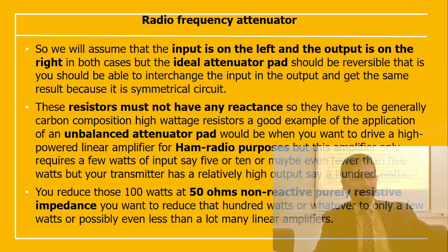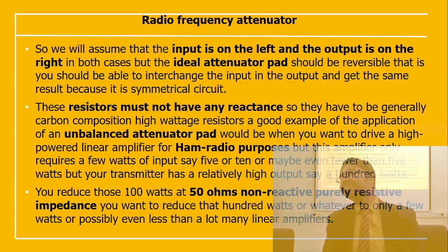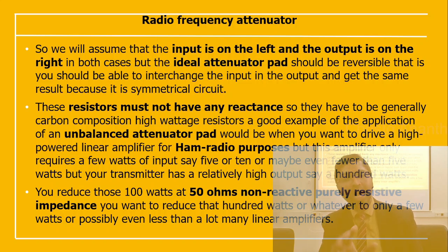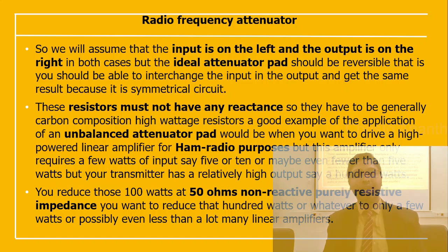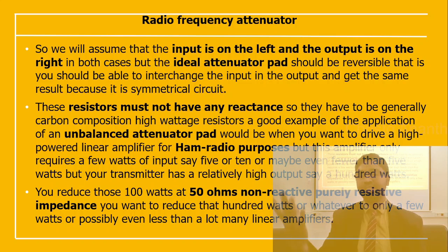We assume input is on the left and output on the right, but an ideal attenuator pad should be reversible — input right, output left — giving the same result due to its symmetric circuit. The resistors must not have any reactance, so they are generally carbon composition high-wattage resistors. This is an example of an unbalanced attenuator pad, used when driving a high-voltage linear amplifier for ham radio, which may require only 5 to 10 watts of input.